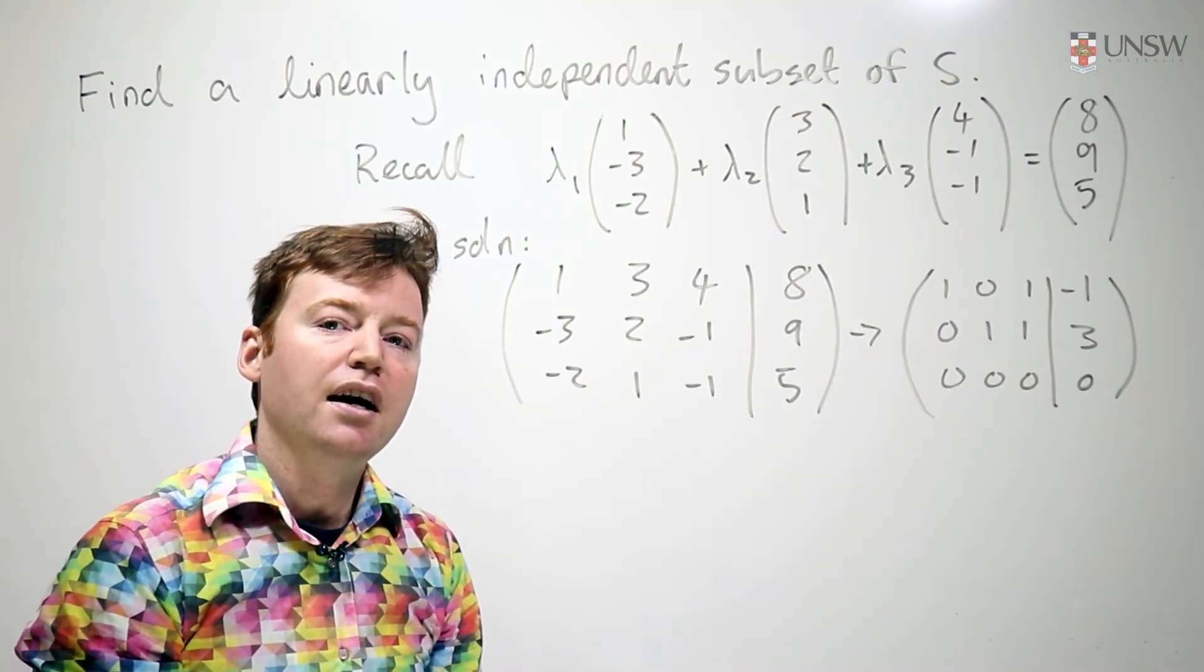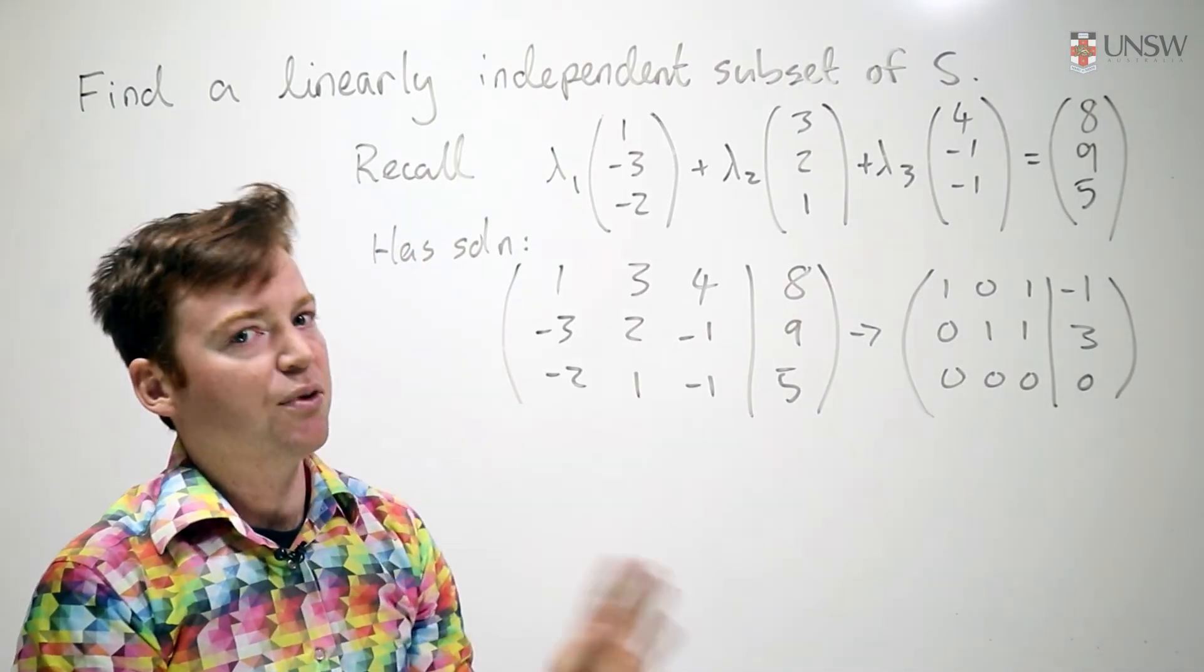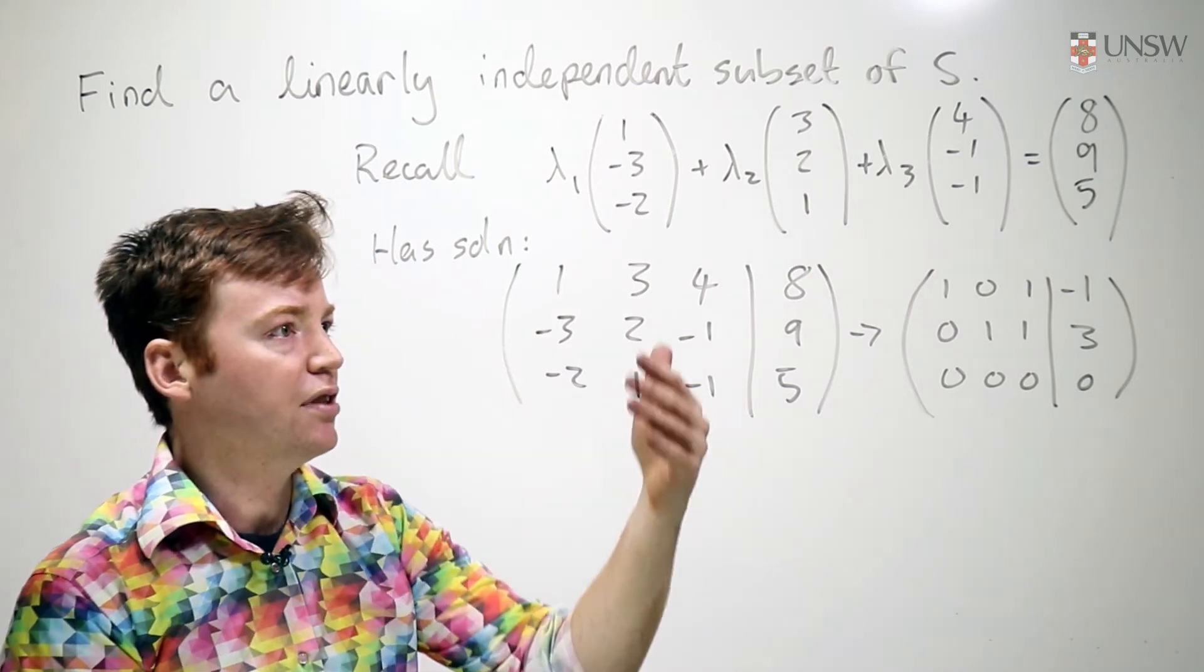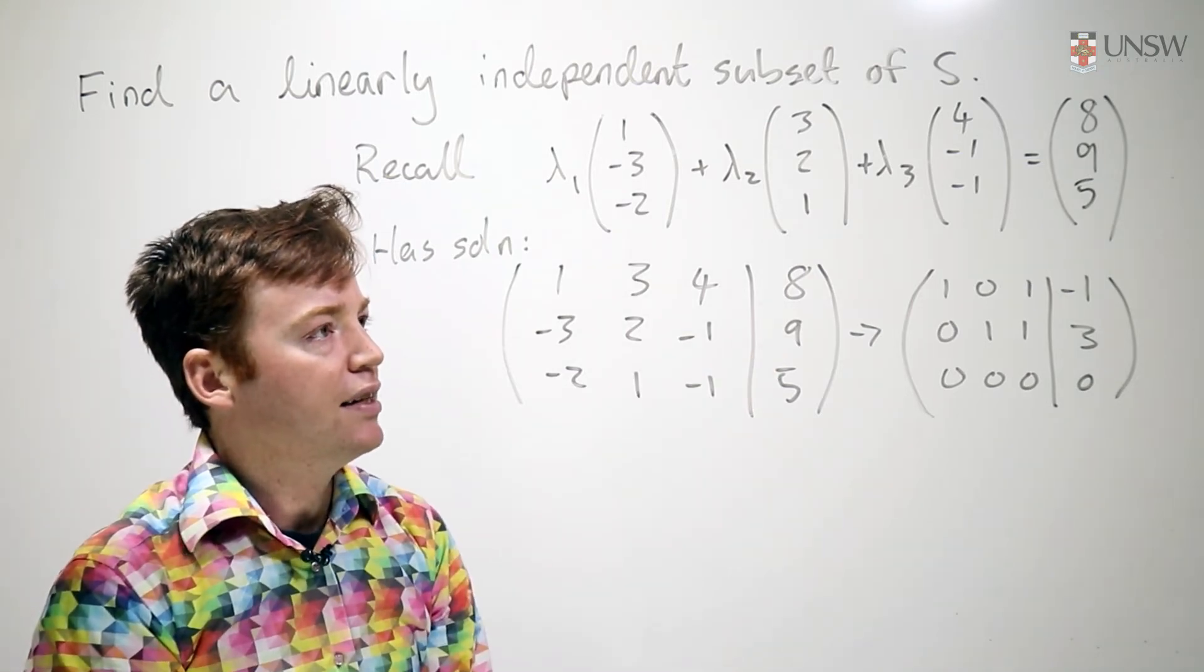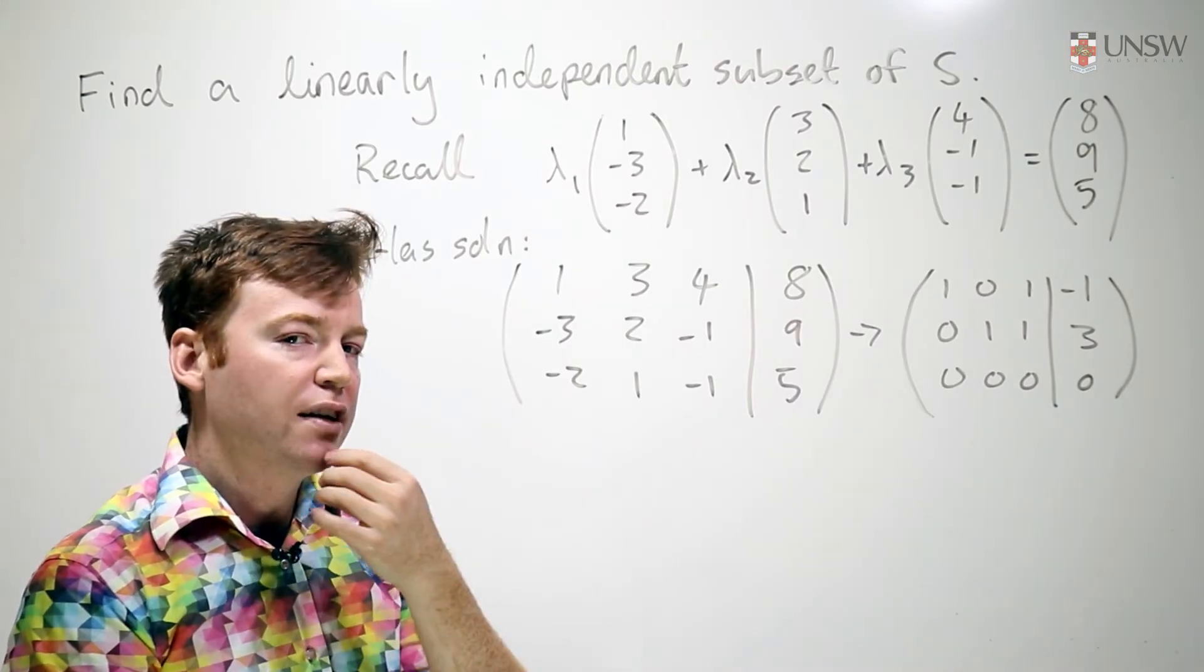Now we're asked to find a linearly independent subset of S. Fortunately, the working out for this question is something we've already done. So I've just left up the stuff from part C. And we're just going to stare at it and think for a little bit.